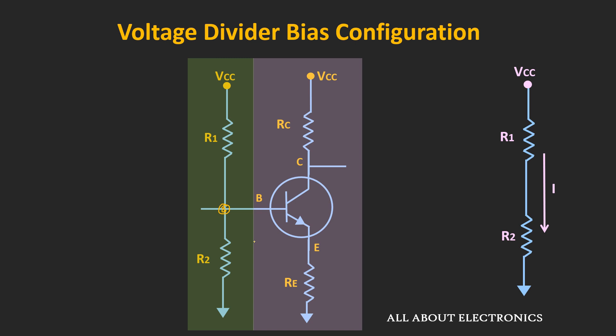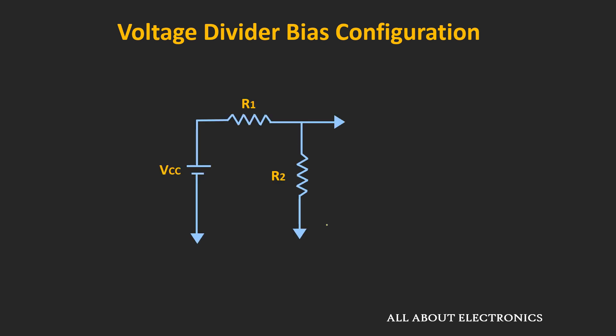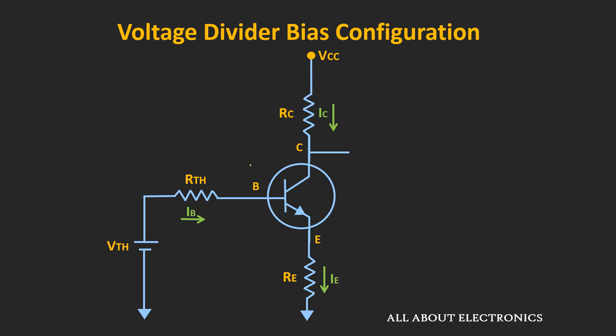The same circuit can also be redrawn, and now let's find the Thevenin's equivalent of this circuit by looking from this side. To find the Thevenin's equivalent resistance, let's short this voltage source. In that case, the Thevenin's equivalent resistance is the parallel combination of R1 and R2. Similarly, the Thevenin's equivalent voltage can be given as R2 divided by R1 plus R2, times Vcc. Once we find the Thevenin's equivalent voltage and resistance, then the equivalent circuit will look like this. Now let's find the expressions for the base current, the collector current, and the voltage Vce.